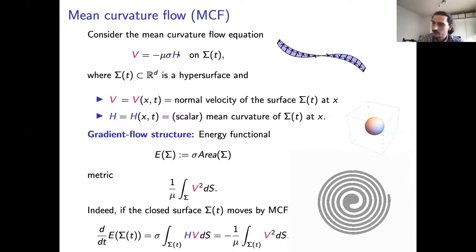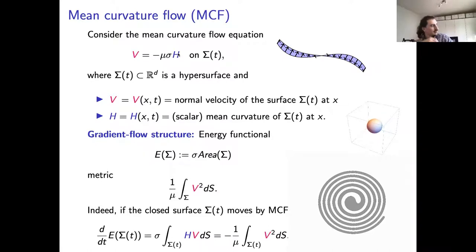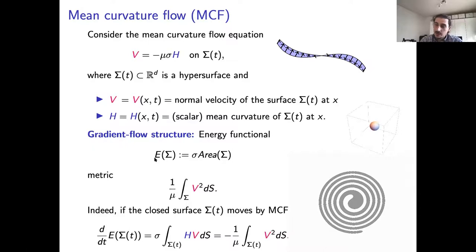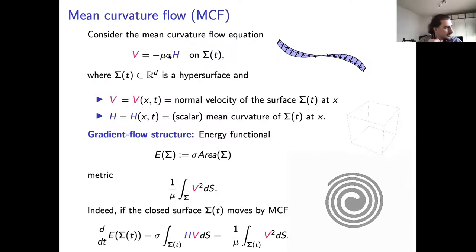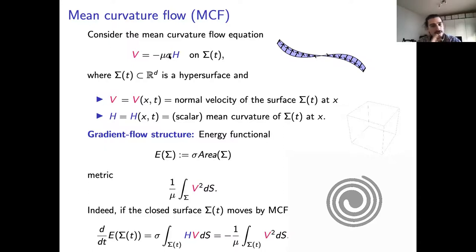The equation we study is: the normal velocity of the surface is proportional to the mean curvature. This is a nice geometric evolution equation and it's the steepest descent — the gradient flow of an energy functional in the L2 metric. There are two weights, the surface tension and the mobility, which have some physical relevance, but for this talk I'm just going to consider two phases in any dimension, so I can scale them out.